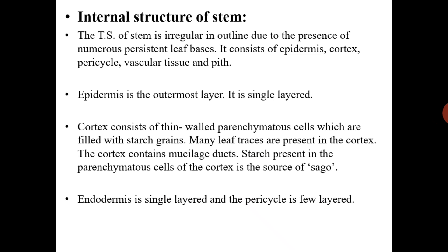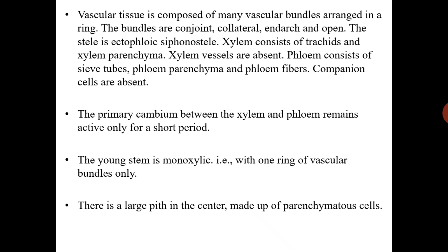Cortex is followed by endodermis, which is a single layer. The pericycle is few-layered. Vascular tissue is composed of many vascular bundles arranged in a ring form. The bundles are conjoint, collateral, endarch, and open. The stele is ectophloic siphonostele.